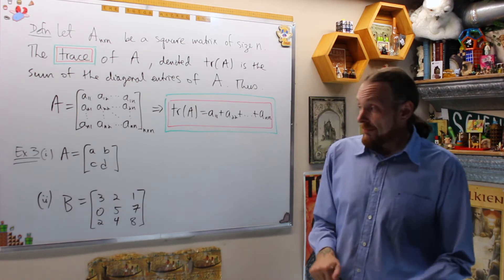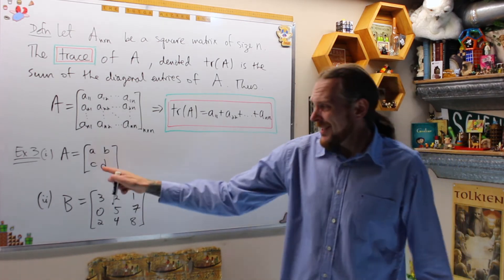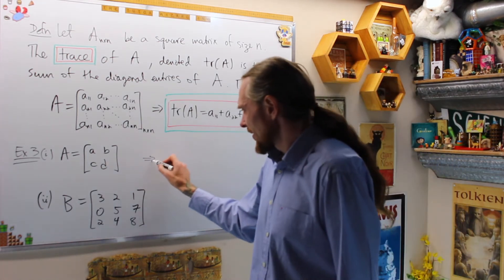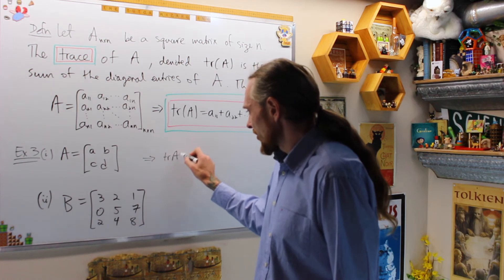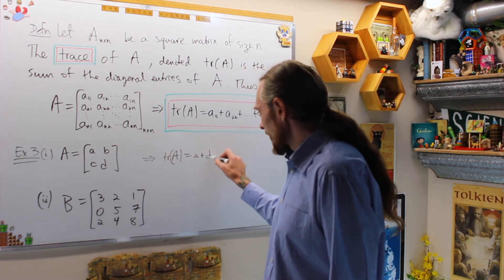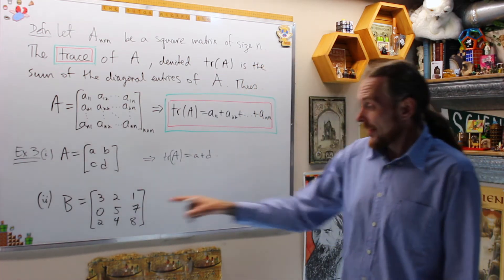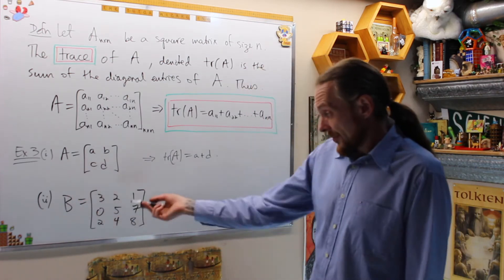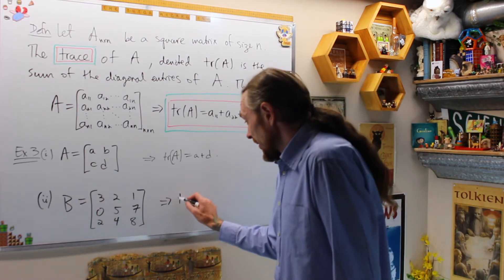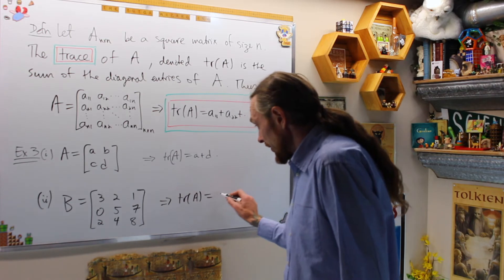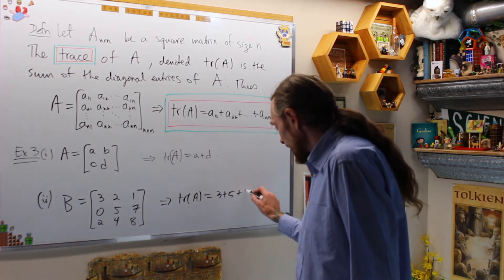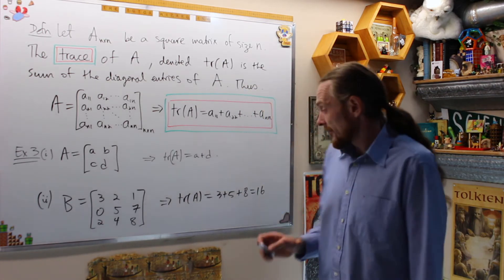Let's do an example as usual. A is [a, b, c, d]. If we have those variables, that says that the trace of this matrix A is a plus d. Here, if we have this matrix B, then the trace of A is equal to 3 plus 5 plus 8, which is 16.